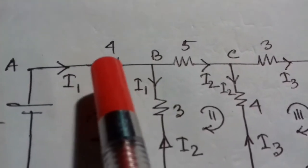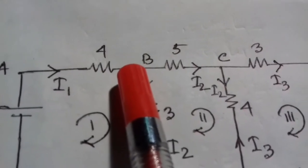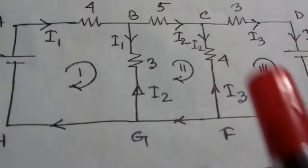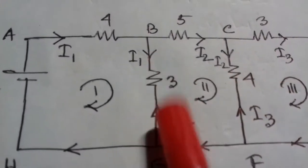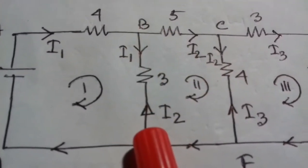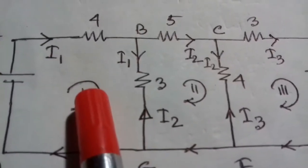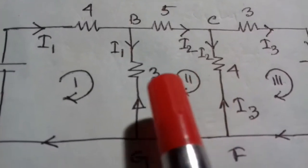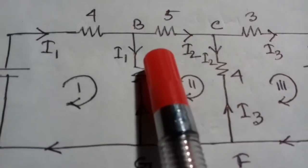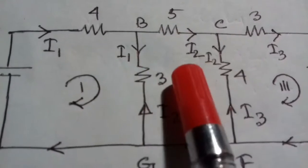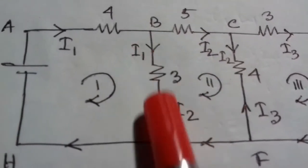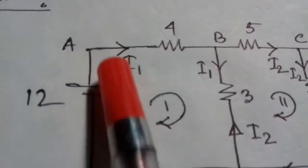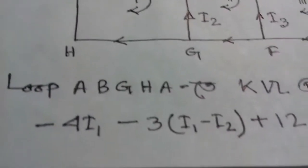When we traverse loop 1, if we enter the positive terminal of a source, it is plus; if negative, we write minus. So we write minus R, and the voltage source is positive, so we write plus 12. This is how we read the KVL equation for loop 1.